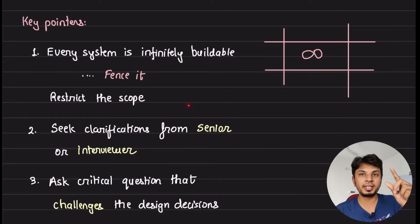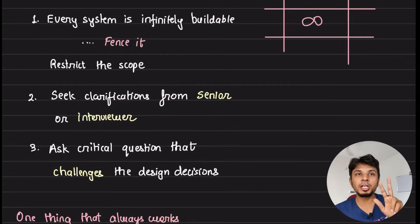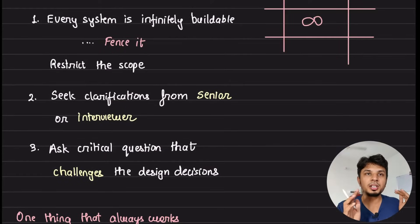Second key pointer is seek clarifications from your seniors or your interviewer. Because every single system design problem is actually ambiguous. No one has an idea on how that system is going to evolve.